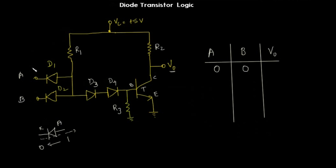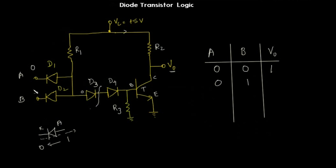For input 0,0, we put 0 for A and 0 for B. The cathodes of diodes D1 and D2 are kept at low voltage. A low voltage will be propagating to diode D3. The anode of diode D3 is at low voltage, so D3 will be cut off. D4 will also be cut off, and the transistor T will be cut off. Since D3, D4, and transistor T are not conducting, power will be sensed only at V₀, giving a high output.